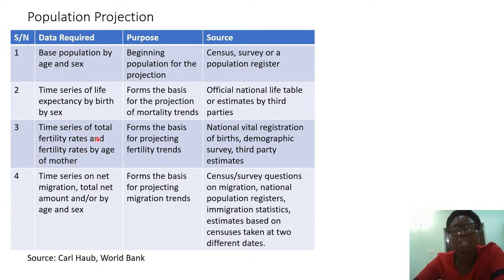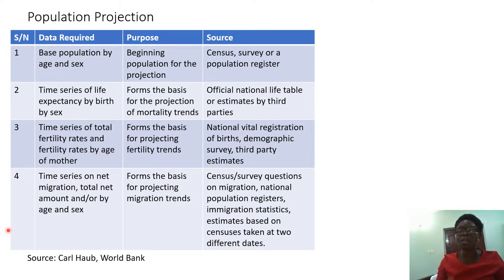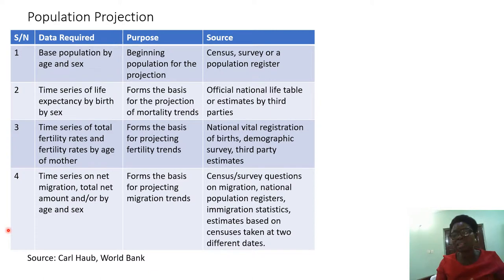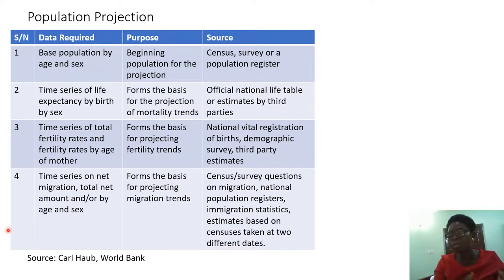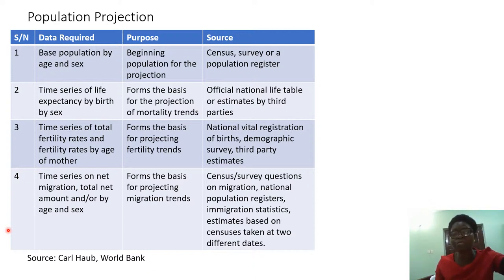The third data required is a time series of total fertility rate and fertility rate by age of mothers. If women are still giving birth at high fertility rates, your population will be large. The age group matters — fertility rates for women aged 15 to 24 may be higher than for those aged 25 to 30 and above. These are vital for projecting and planning for the future.